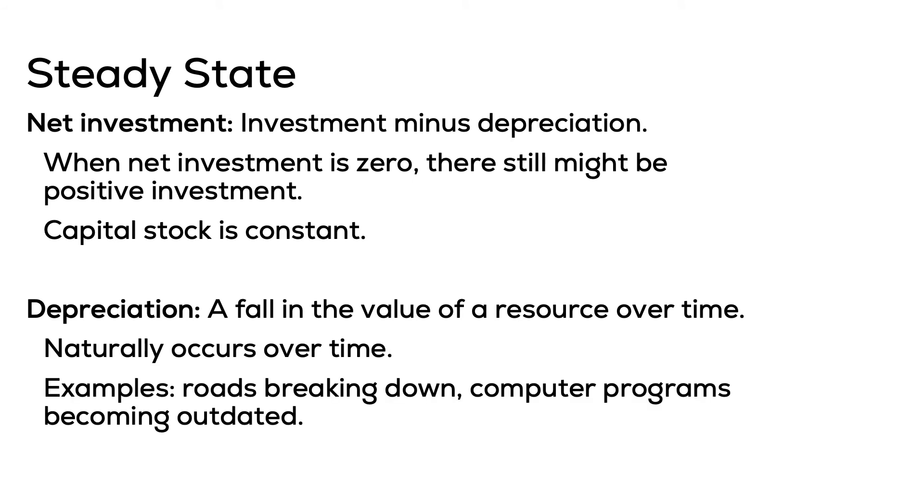No growth in capital — that is what we mean by an economy that has reached steady state. The only way to get out of steady state is to increase your investment rate, which requires an increase in savings rates from our discussions about the loanable funds market. The other way is to find ways to minimize depreciation. Those are the only ways for the economy to grow after reaching steady state.